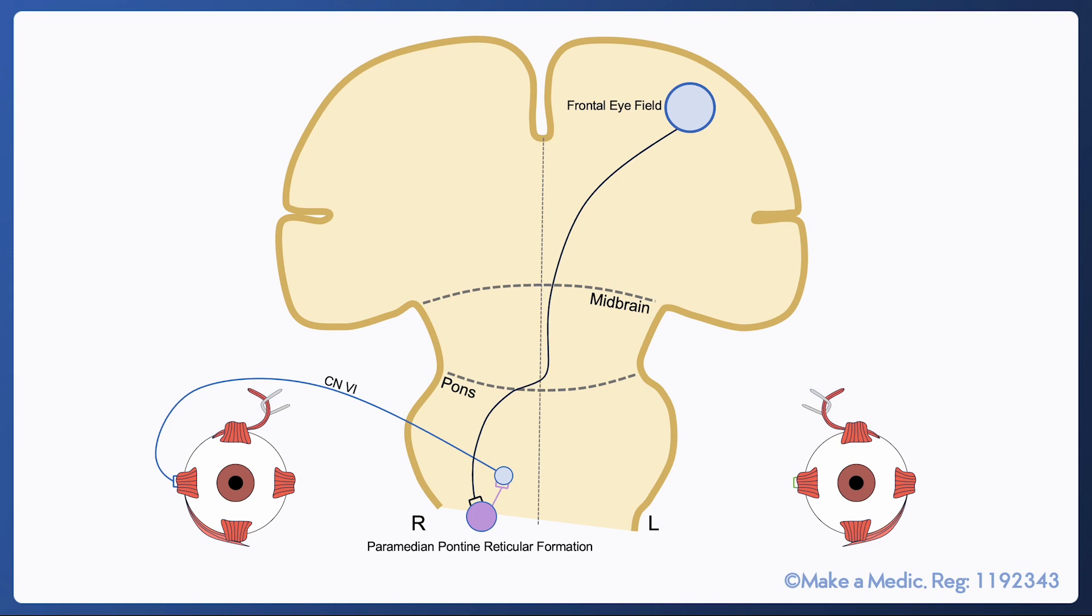From the abducens nucleus there's an interneuron that projects to the oculomotor nucleus via a pathway called the medial longitudinal fasciculus or MLF. The oculomotor nerve innervates the left medial rectus causing adduction of the left eye. This is the system that controls voluntary horizontal gaze and there are similar pathways that coordinate vertical gaze.